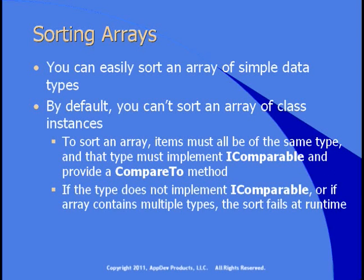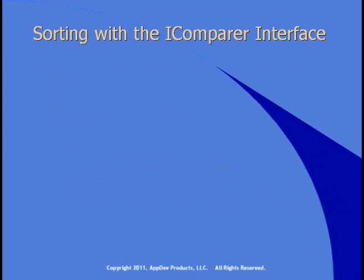You might be wondering at this point, what does this have to do with generics? It turns out that the introduction of generics provides you with a number of ways of getting around this issue. What do you do if the class you're using doesn't implement iComparable? How do you sort instances of the class?